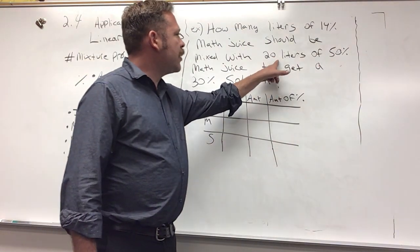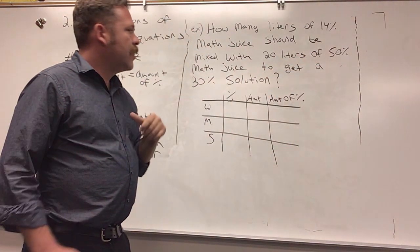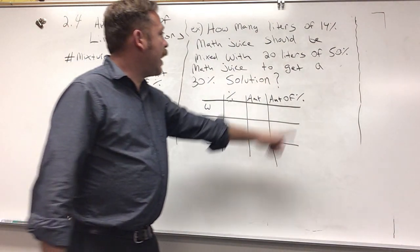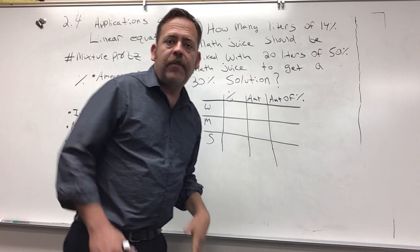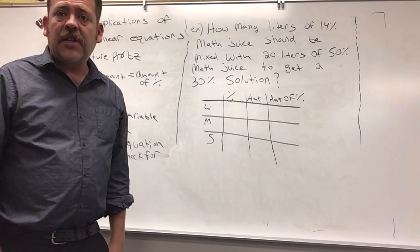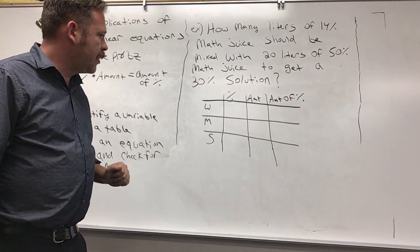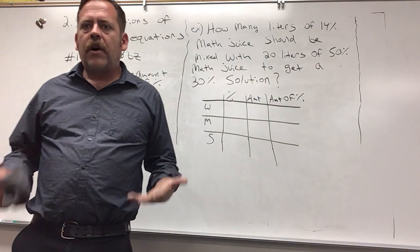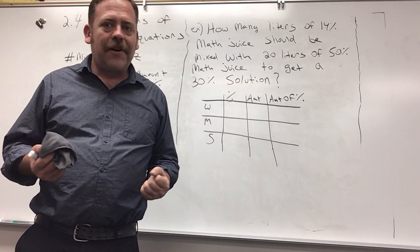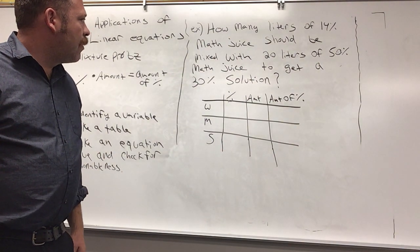This person has 20 liters of 50% math juice and they want to dilute it a little bit, so they're going to add 14% math juice to make it weaker. They're going to keep adding that 14% math juice until they get their favorite percentage which is 30%. Part of understanding these problems is understanding what's going on in the situation.